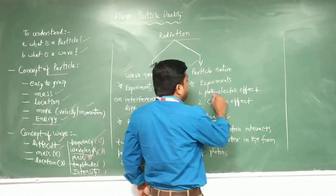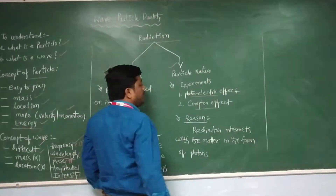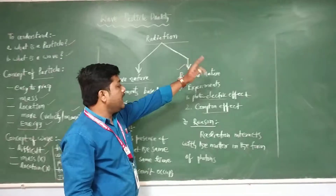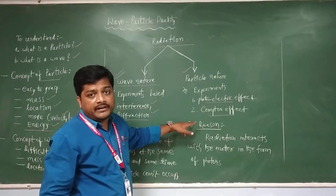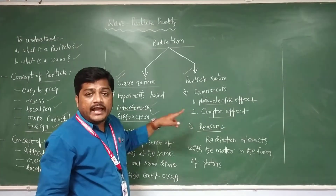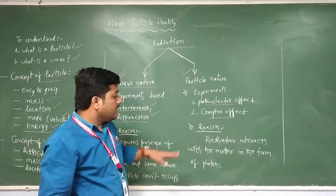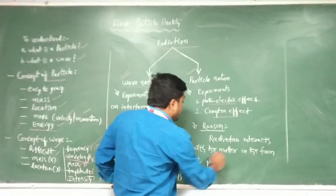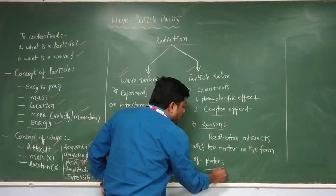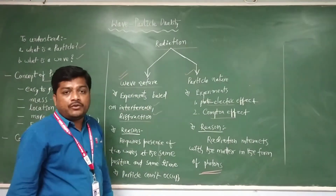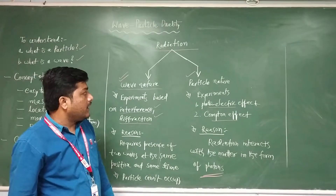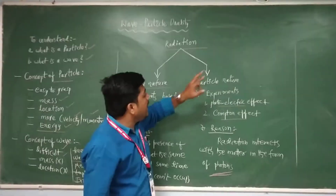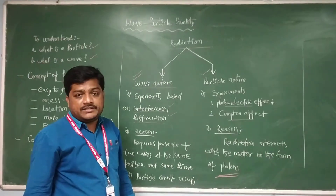In our study of the photoelectric effect and Compton effect, some radiation falls on a metallic surface and the radiation interacts with the metallic surface — specifically, radiations interact with the electrons. Here a collision happens, and the radiation interacts with the matter in the form of photons. A photon is a particle. So these experiments reveal that radiation behaves with particle nature.